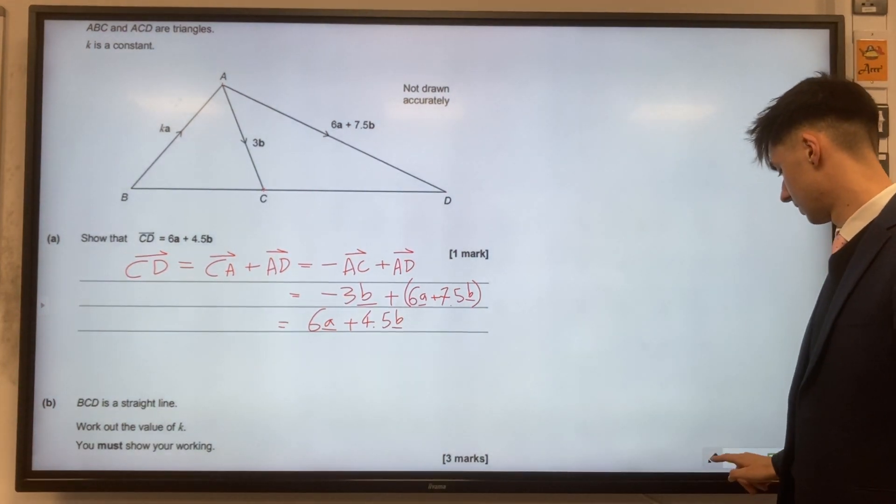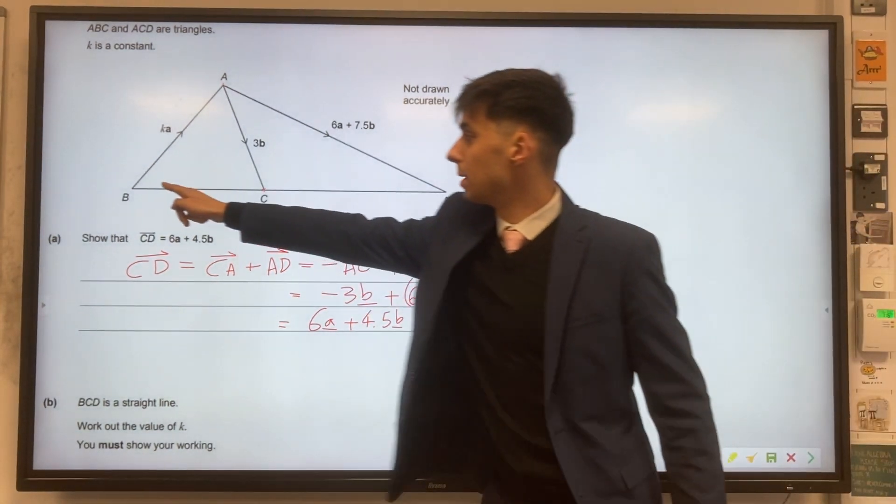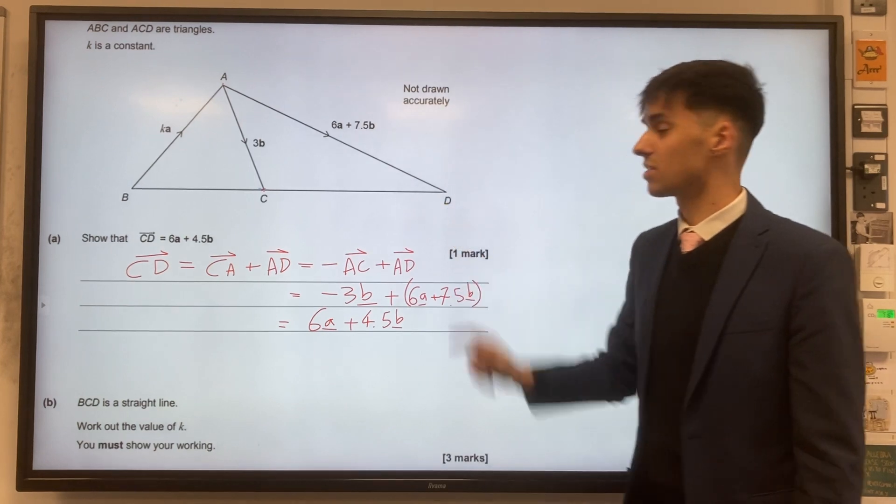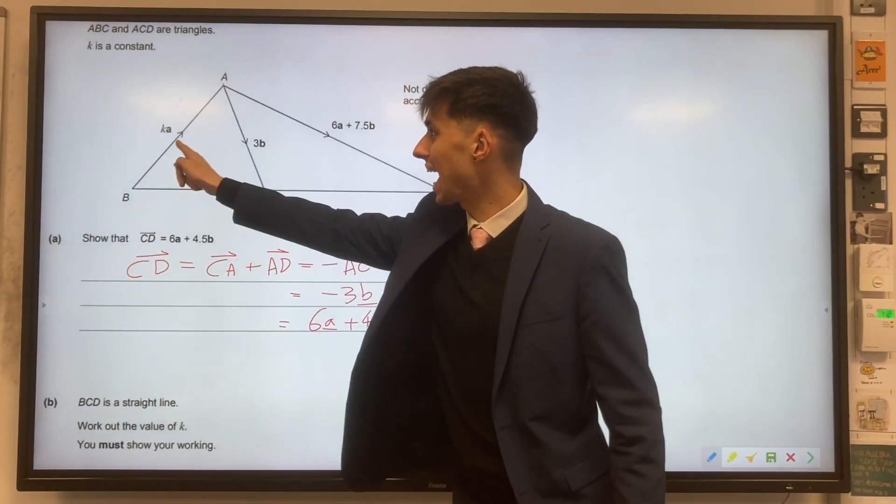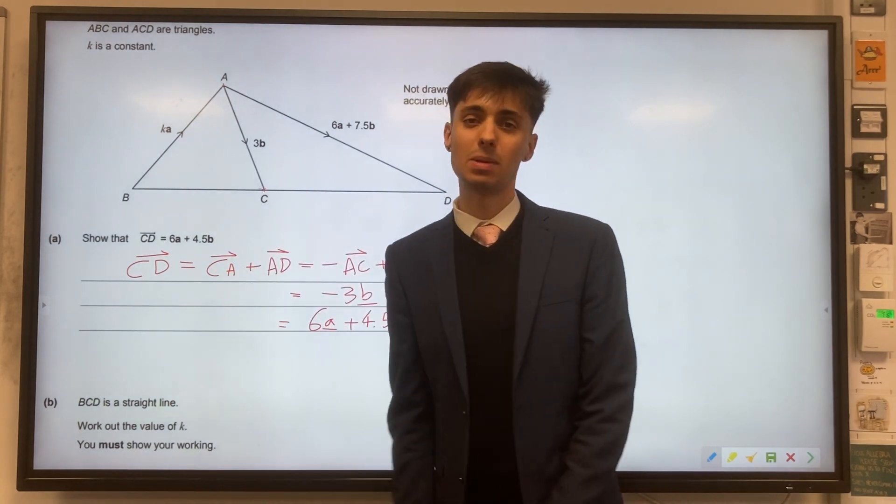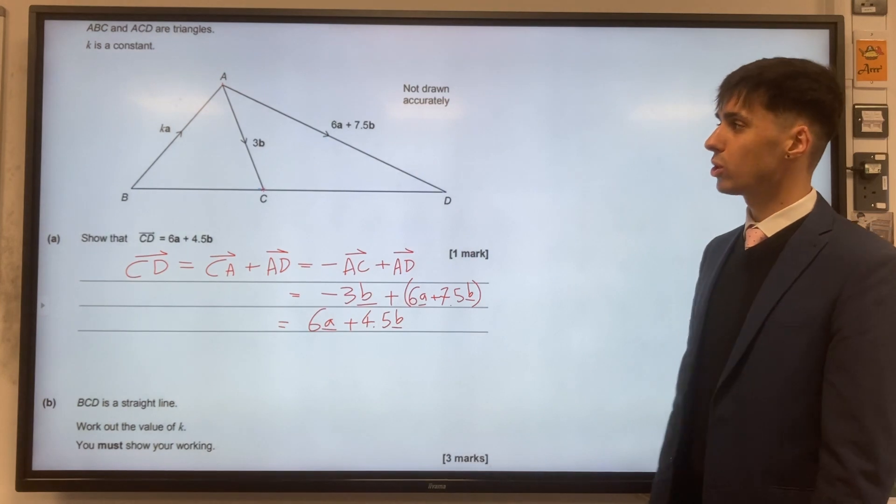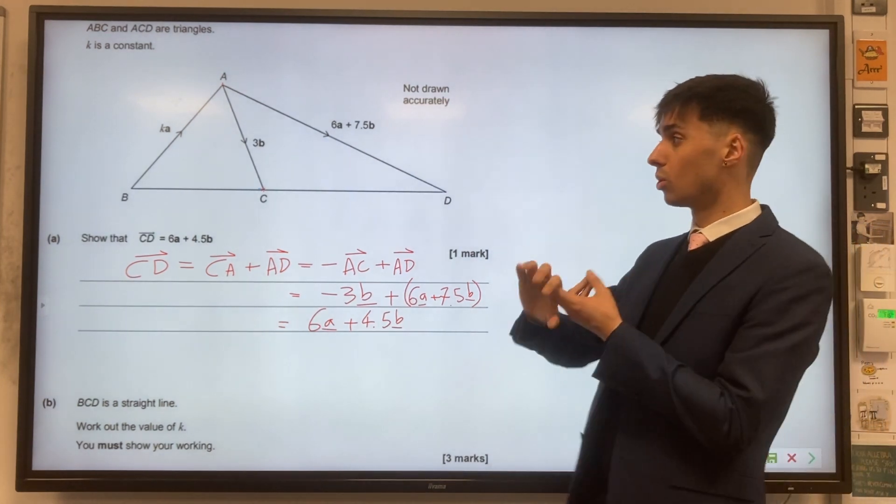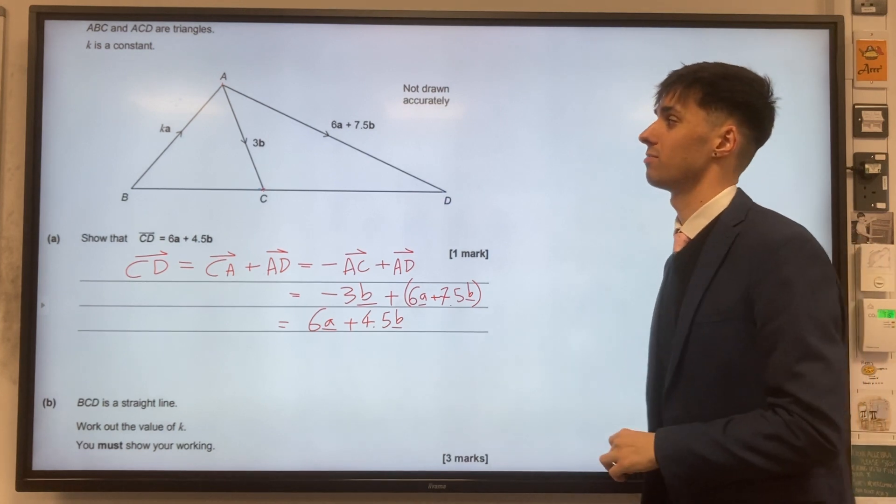For part B, we have quite a common theme in this question. It tells us that B, C, D is a straight line. We need to work out the value of K in this vector here. The common theme that's often in vector proofs is when you're showing something is a straight line or showing that things are parallel, we're looking for scalar multiples of vectors.